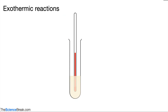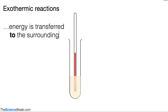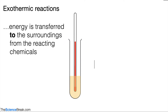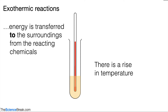Here is an example of an exothermic reaction. There are two reacting chemicals in the boiling tube, and in this reaction, energy is transferred to the surroundings from the reacting chemicals. If you were to look at the temperature on the thermometer, you would see the temperature rise. So in this case, there is a rise in temperature of the reacting chemicals — this is an exothermic reaction.